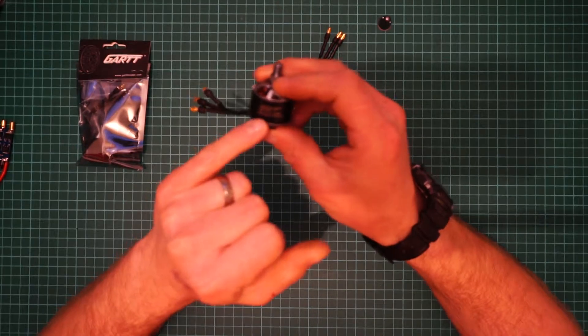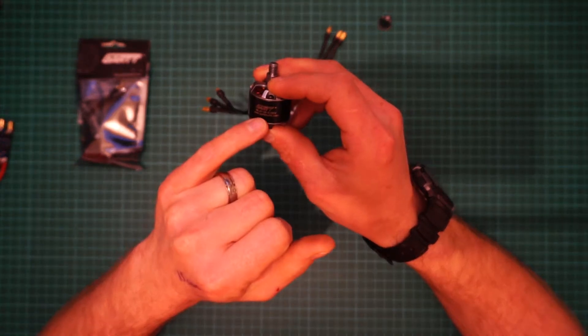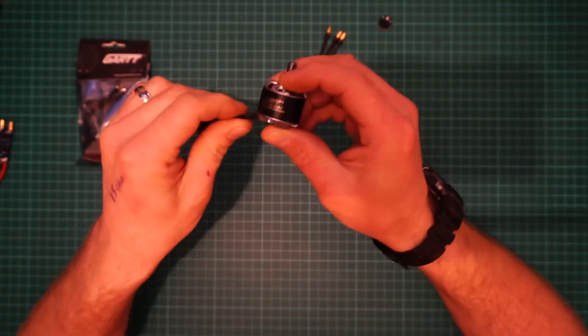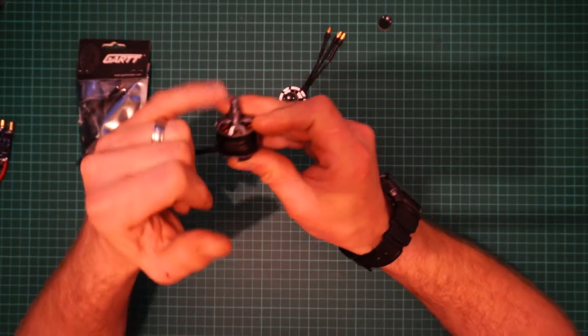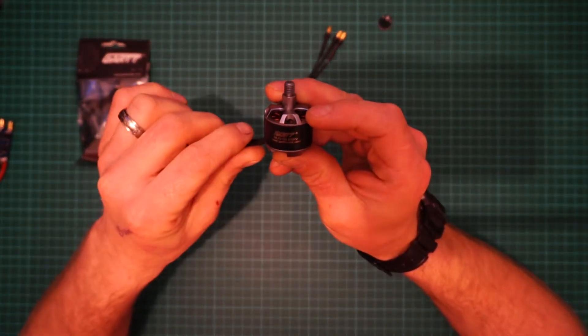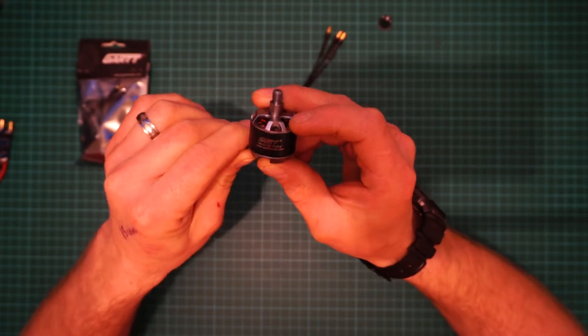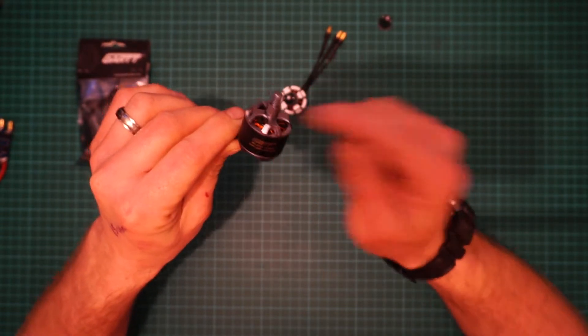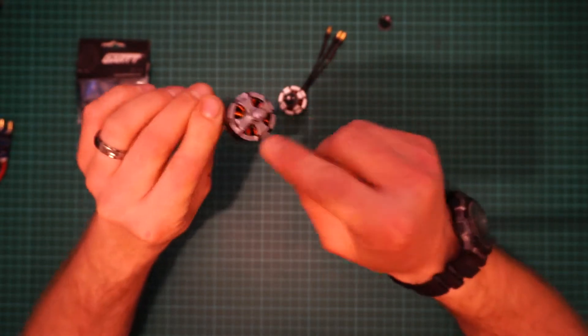Just a quick look. Obviously we have the ML2212S 920kV motors. The S stands for shaft. You will find Gart ML2212 as well but without the S. The S means they have no shaft and they come with holes in the top where you can fit prop adapters or just normal T type propellers.